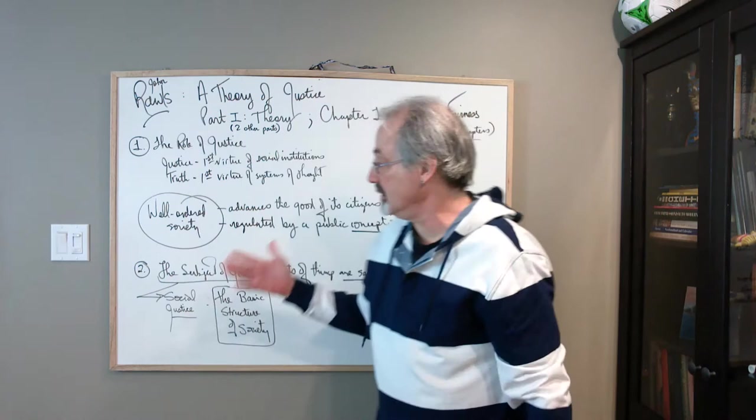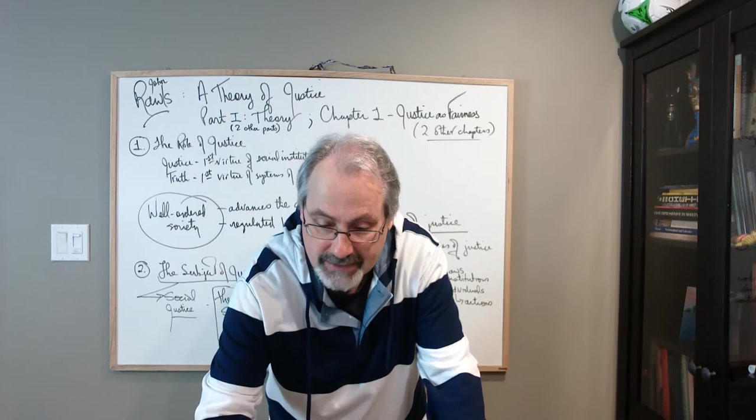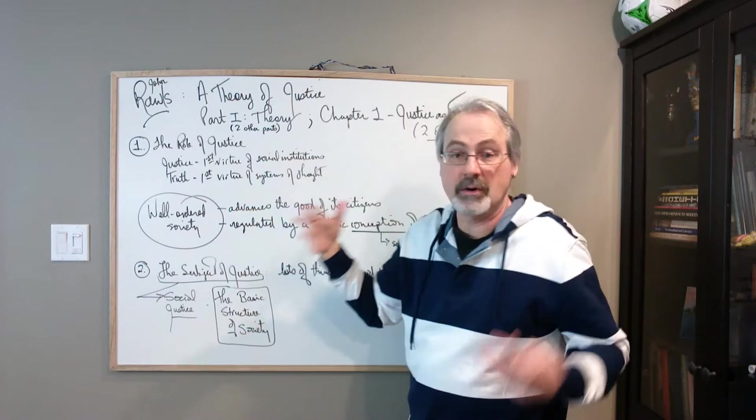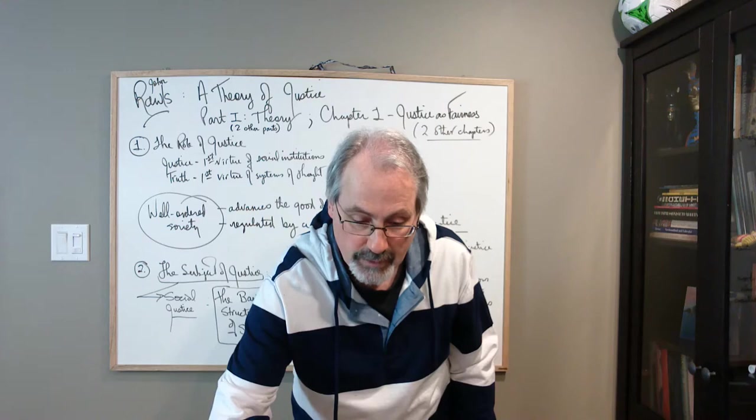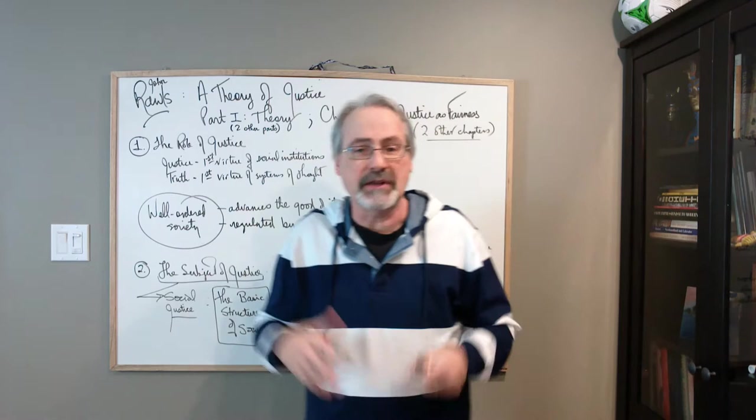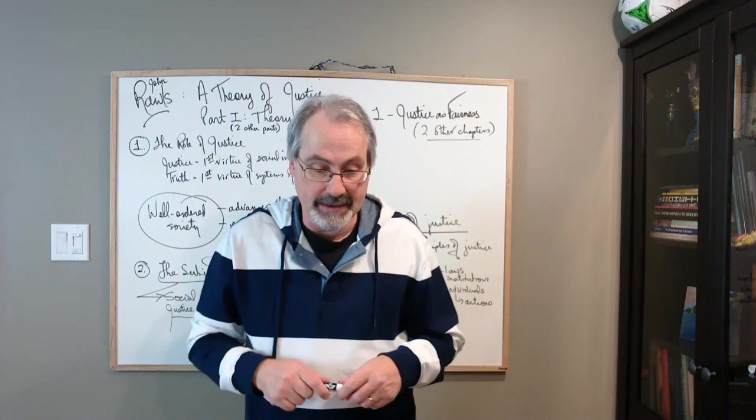So again, we have the social institutions, their first virtue is justice. And both of these, social institutions and systems, they don't mean anything unless they correspond to their first virtues. And again, so Rawls says that he's probably overstated a lot of this and he's going to work it through to see how well it can be accommodated.